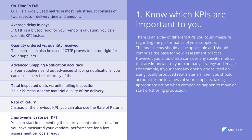Tip 1: Know which KPIs are important to you. There is an array of different KPIs you could measure regarding the performance of your suppliers. You should also consider any specific metrics that are important to your company's strategy and image. For example, if your company openly prides itself on using locally produced raw materials, then you should account for the localness of your suppliers, taking appropriate action when companies happen to move or start offshoring production.